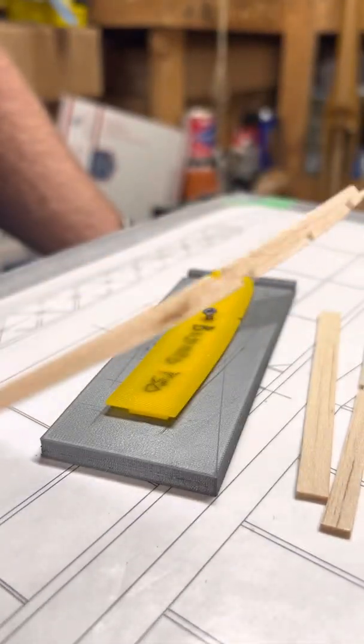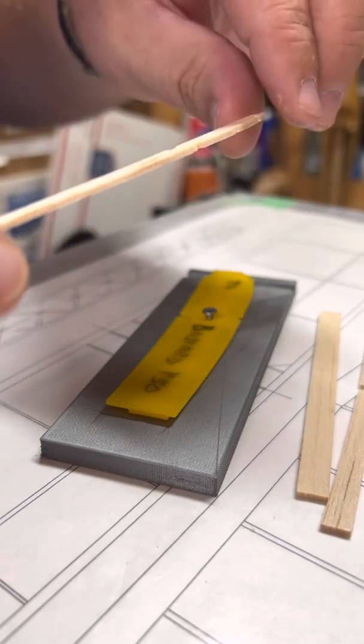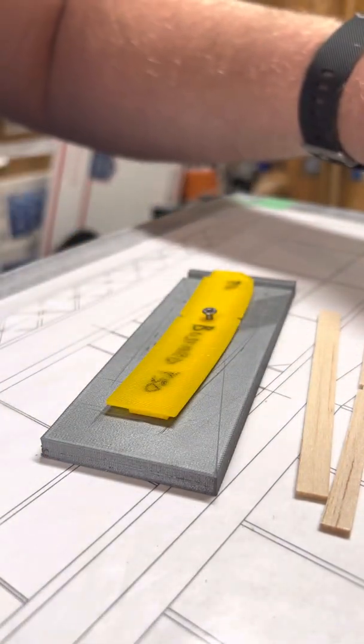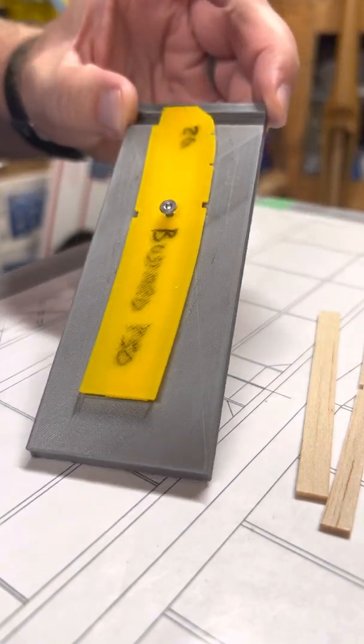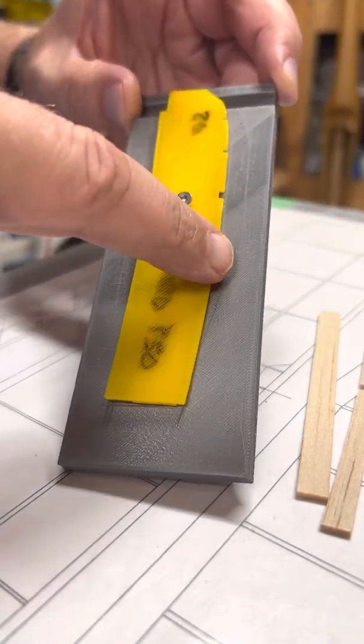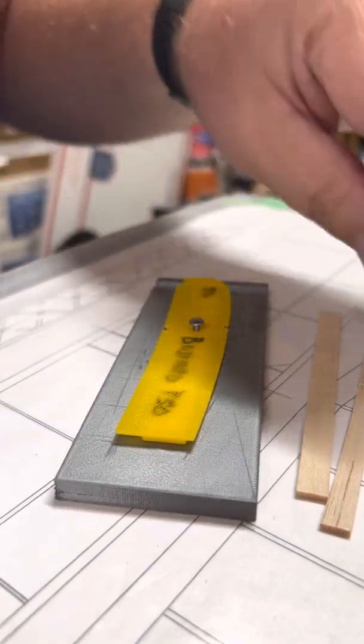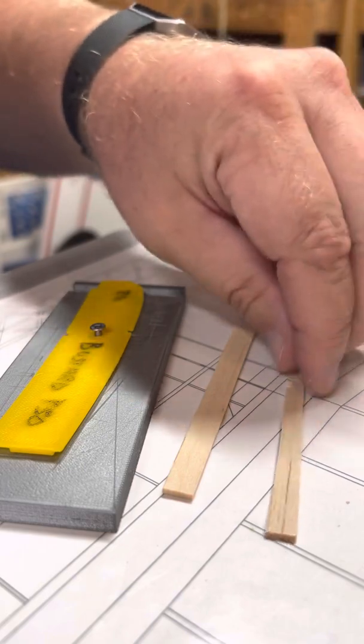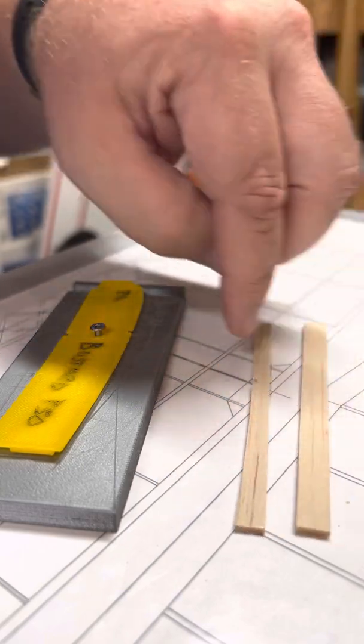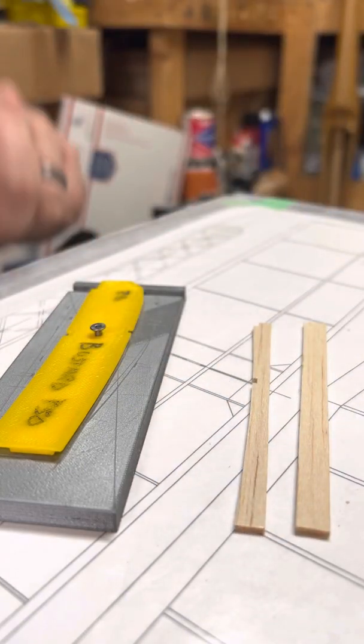So what we have is the bottom of the rib and top of the rib. You can see here I've already cut one of the bottoms.